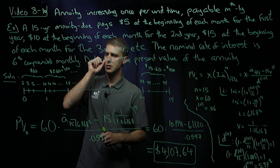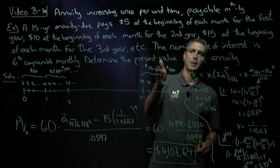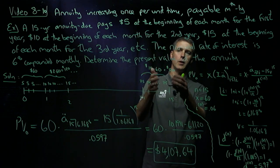So I'm getting $60 during the first year, twice $60 during the second year, and up to 15 times $60 during the final 15th year.